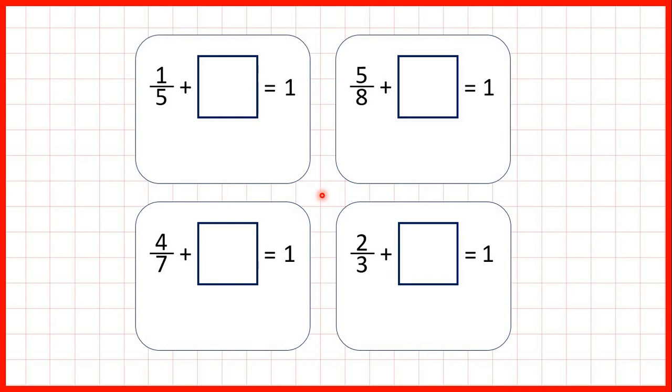Now for these questions we need to make fraction bonds to 1. So first 1/5 plus what is equal to one whole? Well let's show 1/5 in our fraction bar. What do we need to add so that our whole fraction bar is colored in?